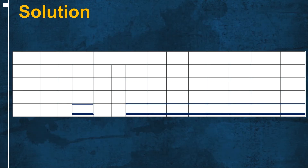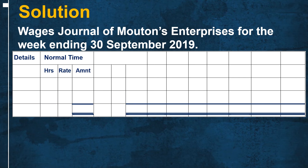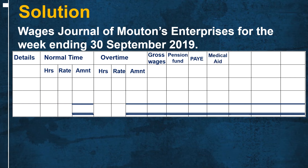Let us look at the answers for the above exercise. We start by writing the heading of the Wages Journal: 'Wages Journal of Maton Enterprises for the week ending 30 September 2019.' We then draw the columns of the Wages Journal, which are: the details column, the normal time column (with hours, rate, and amount sub-columns), the overtime column, the gross wage column, the pension fund column, the PAYE column, the medical aid column, the social security column, the total deduction column, and the net wages column.